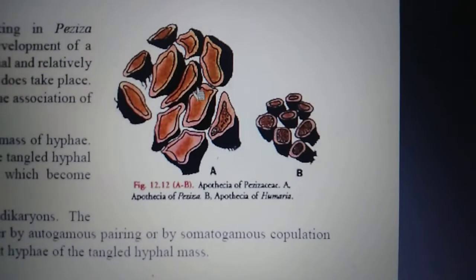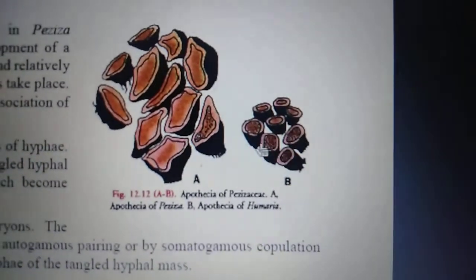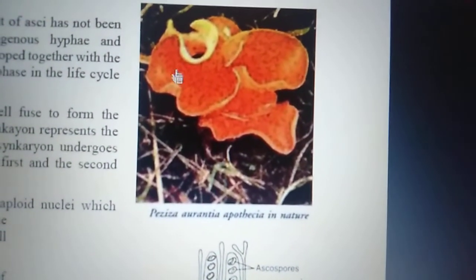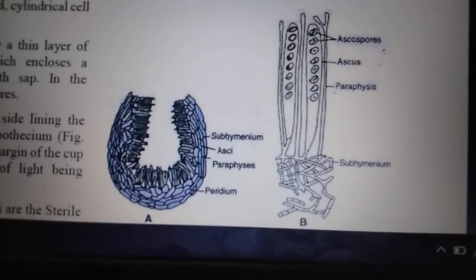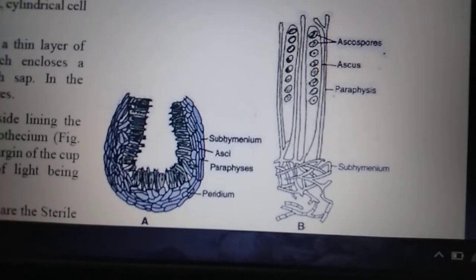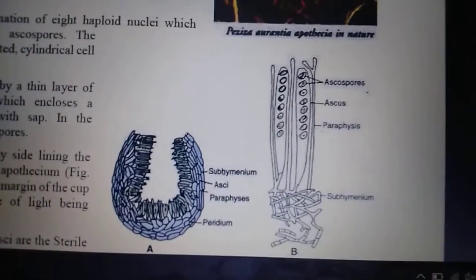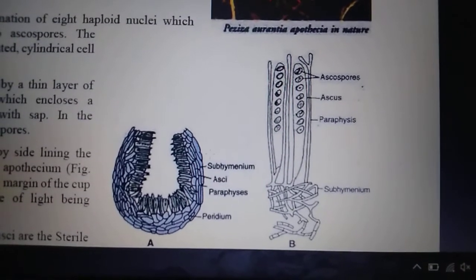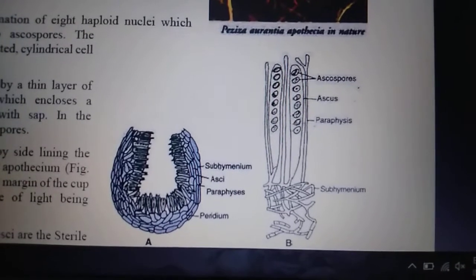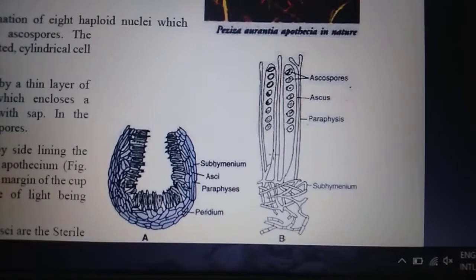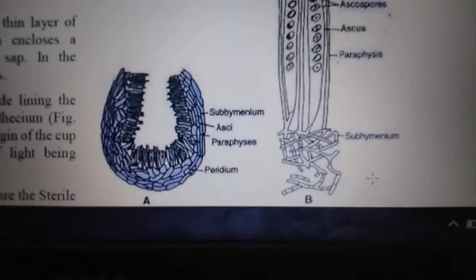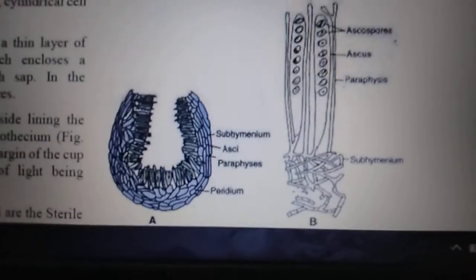These are the Apothecia of Peziza and Humaria species. This is the Apothecium of Peziza aurantia — cup-shaped — which is the fruiting body. In the cross-section diagram, you can see the peridium as the outer layer, the paraphyses, the asci with 8 ascospores each, and the subhymenial hyphae.